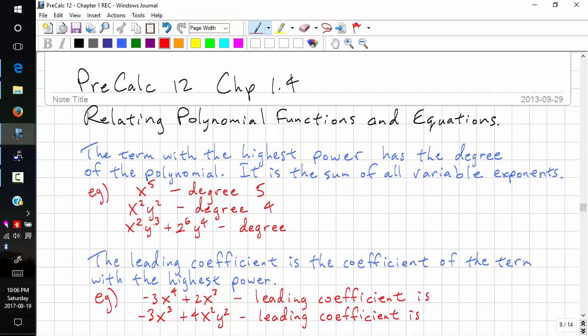Here we have degree 5. Here, this is degree 4. We don't count exponents for the constant terms, only variable terms. So the degree here is 5.